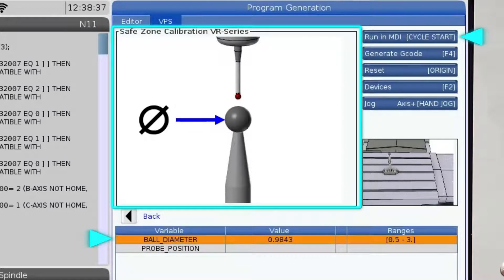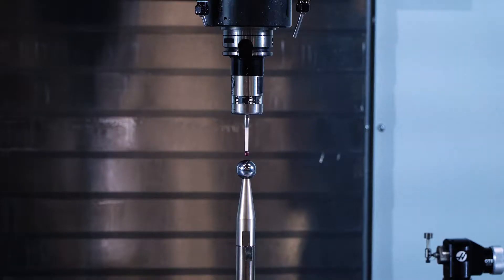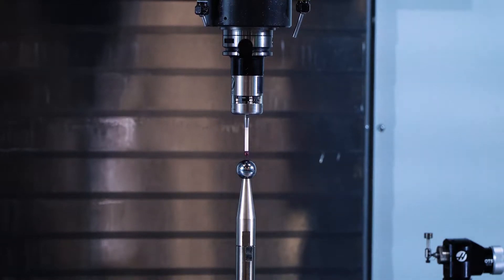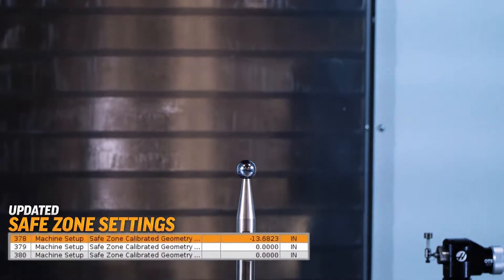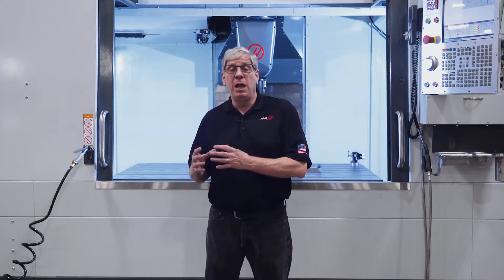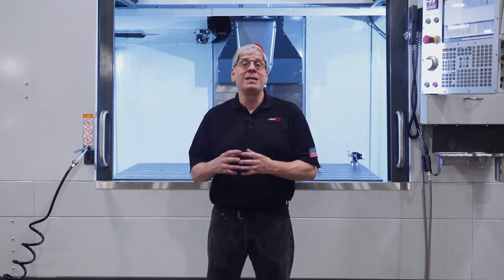The probing cycle for safe zone calibration simply probes to find the X, Y, and Z location of the ball. As with the MRZP template, the probing program will write the measured values to the proper settings. After you've completed the MRZP and safe zone calibration process, your machine is ready to set up and run.